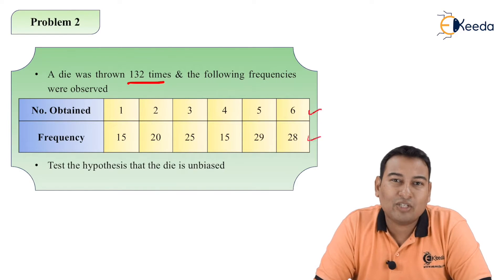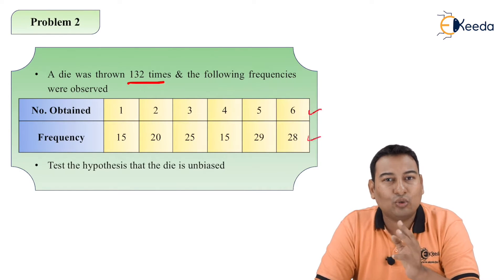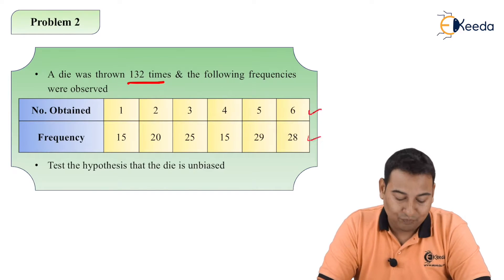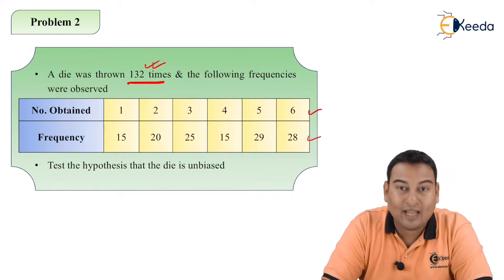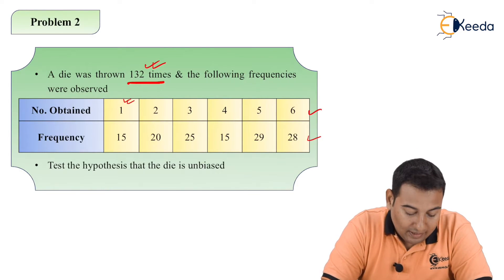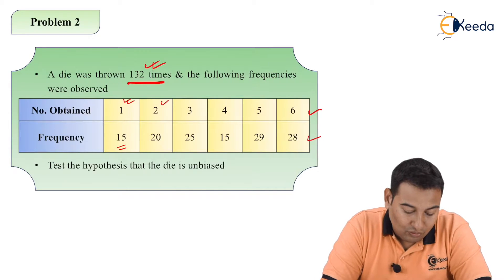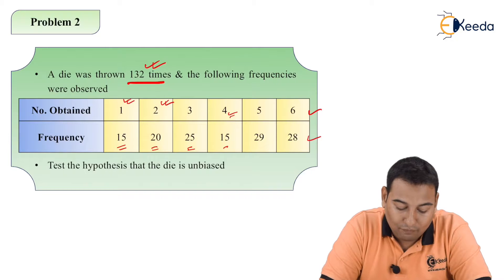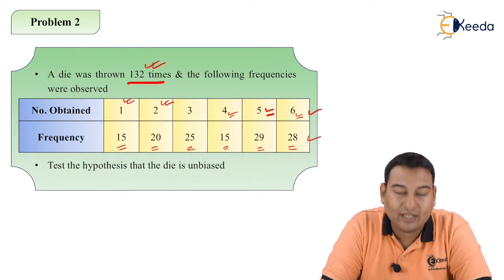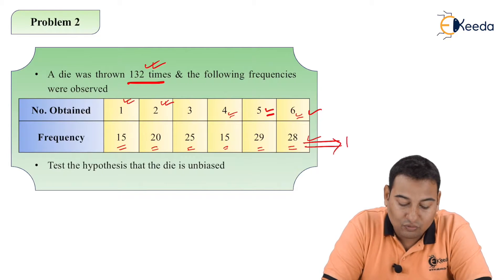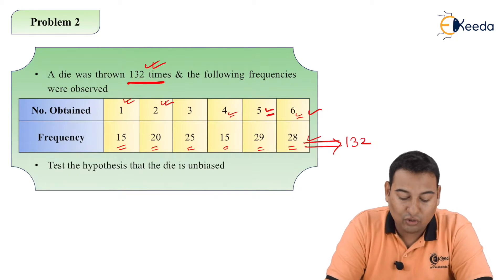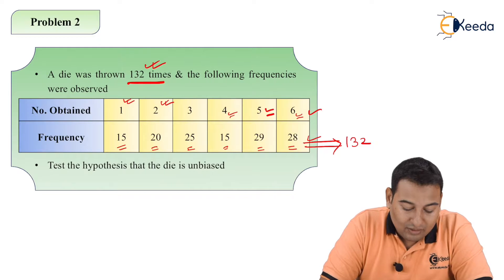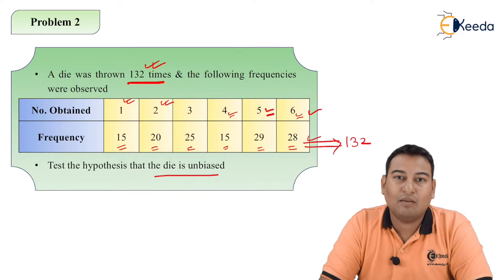Obviously if you throw a die what are the possible outcomes? You can get 1, 2, 3, 4, 5, or 6. It is thrown 132 times: 1 appeared 15 times, 2 appeared 20 times, and so on - 3 appeared 25 times, 4 appeared 15 times, 5 appeared 29 times, and 6 appeared 28 times. If you add all this you will get 132. Test the hypothesis that the die is unbiased.